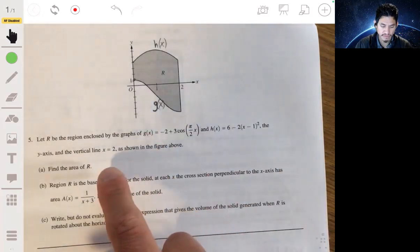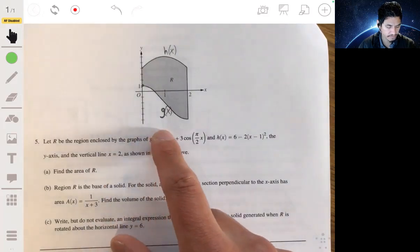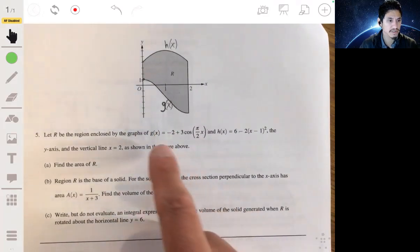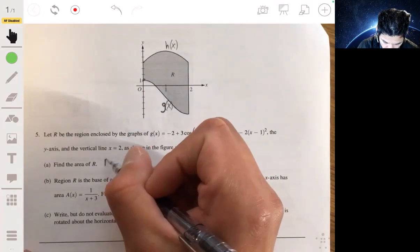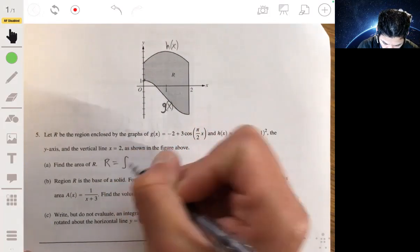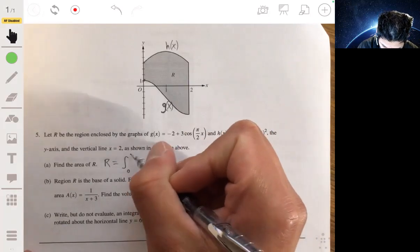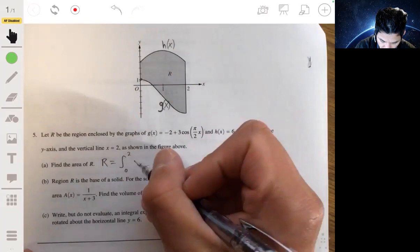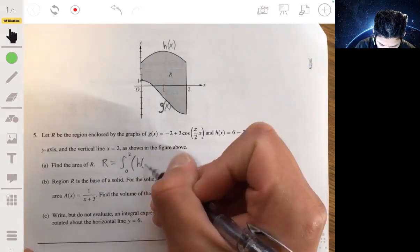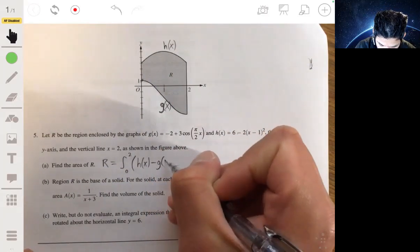So to find the area of r, you essentially want to make sure you set up your integral correctly. So r is going to be equal to the integral from 0 to 2, and it's going to be the top function minus the bottom function, so it's going to be h(x) minus g(x).